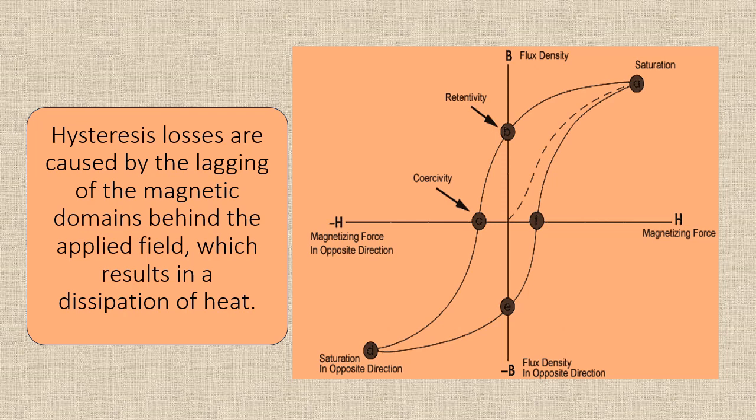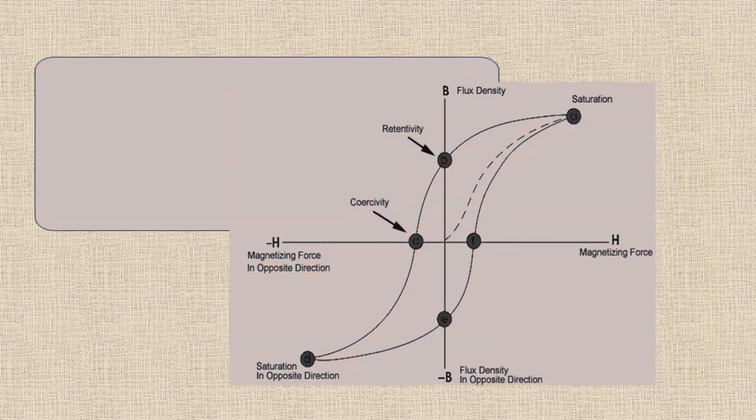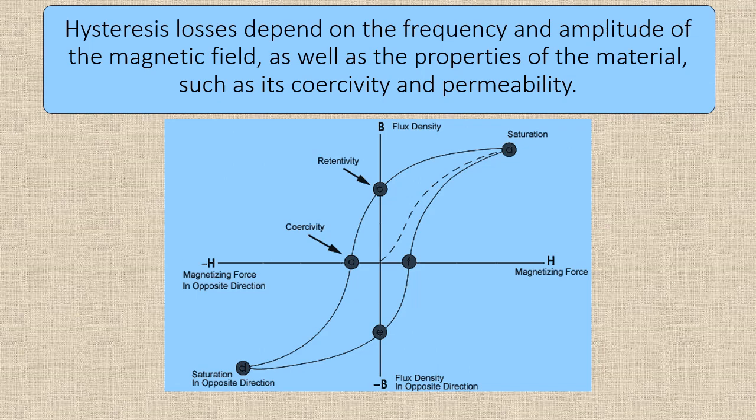Hysteresis losses are caused by the lagging of the magnetic domains behind the applied field, which results in dissipation of heat.